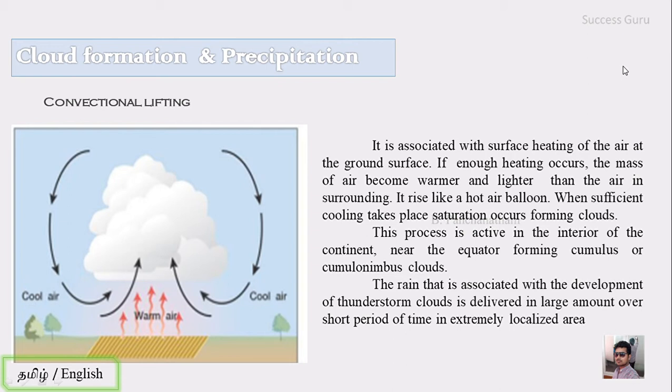The rain associated with the development of thunderstorm clouds is delivered in large amounts over a short period of time in extremely localized areas. If you want to know more about convectional lifting, we've already discussed it in our previous class.